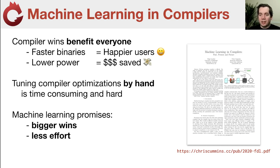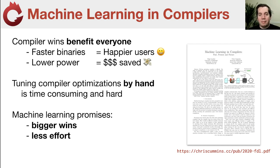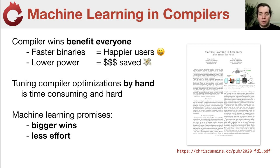What we're trying to do instead is cast the tuning of compiler optimizations as a data science, as a machine learning problem. The benefits would be that not only can it do a better job than humans tuning things by hand, but more importantly, we've taken the human out of the loop. So we're no longer dependent on compiler engineers having to pour enough hours into every single optimization to get the best performance.